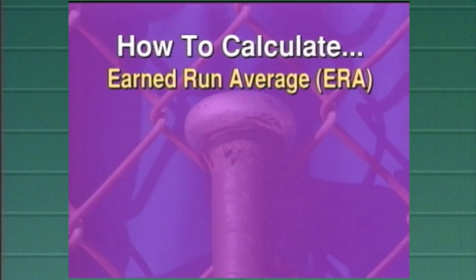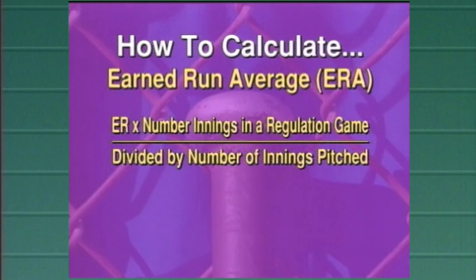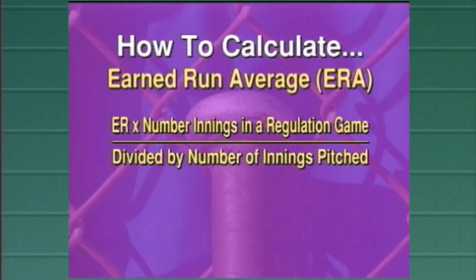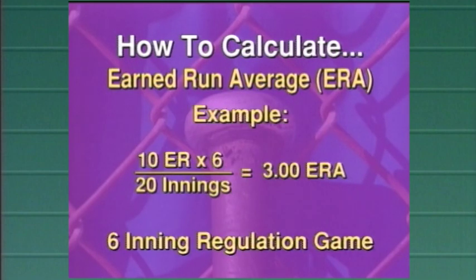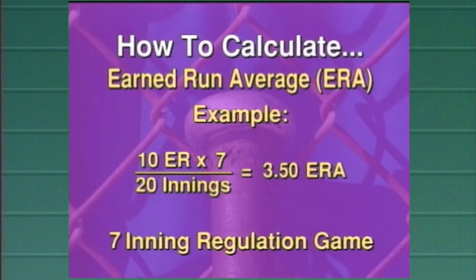The earned run average, or ERA, for a pitcher is calculated by taking the earned runs times the number of innings in a regulation game, then dividing that number by the number of innings that pitcher has pitched. In this case, 20 innings with 10 earned runs by 6 regulation innings gives a 3 ERA.